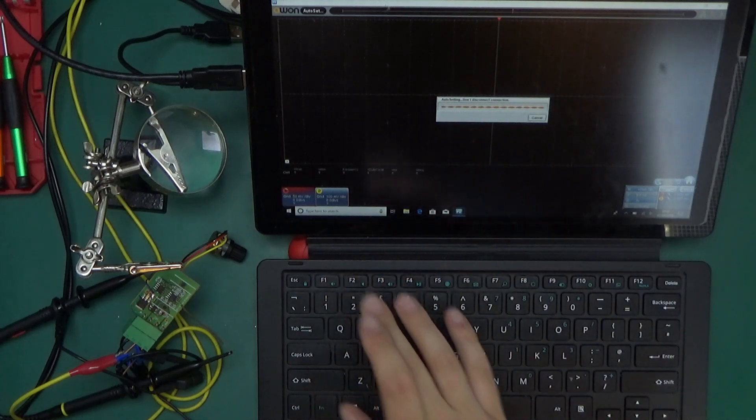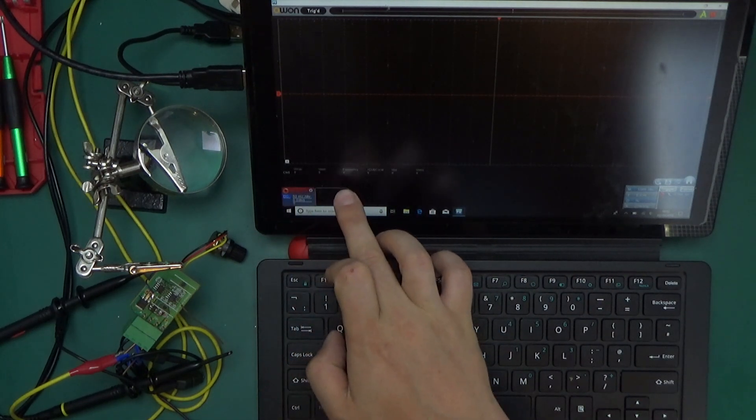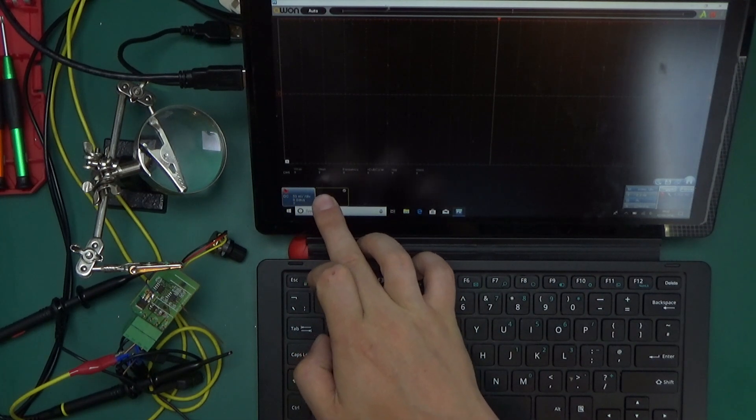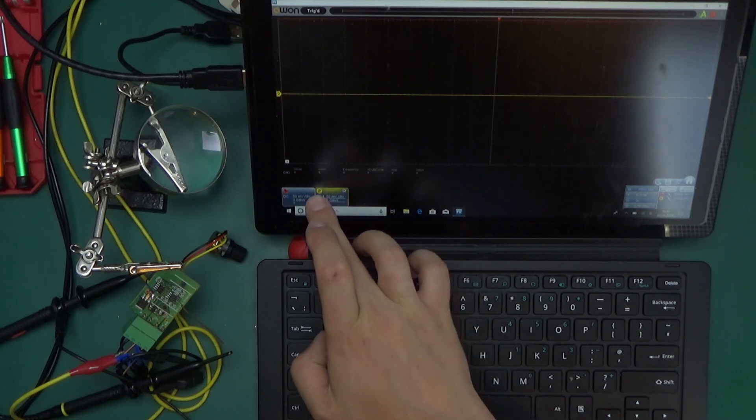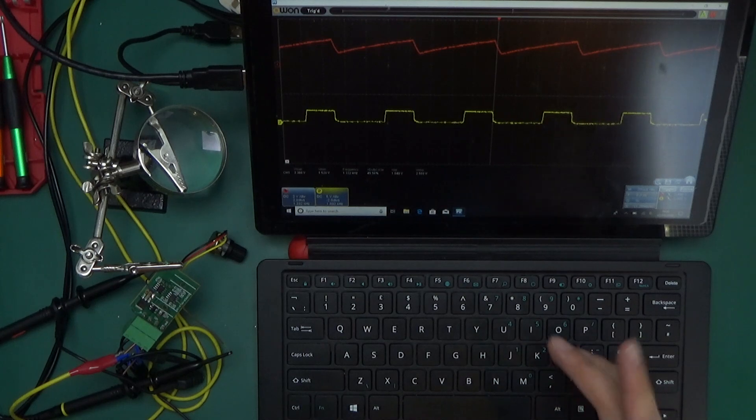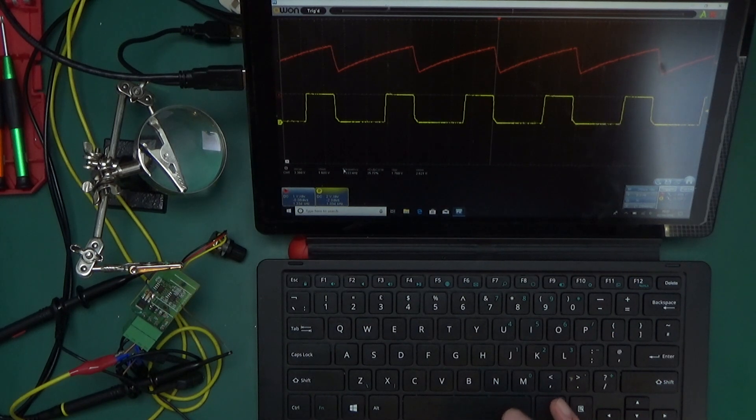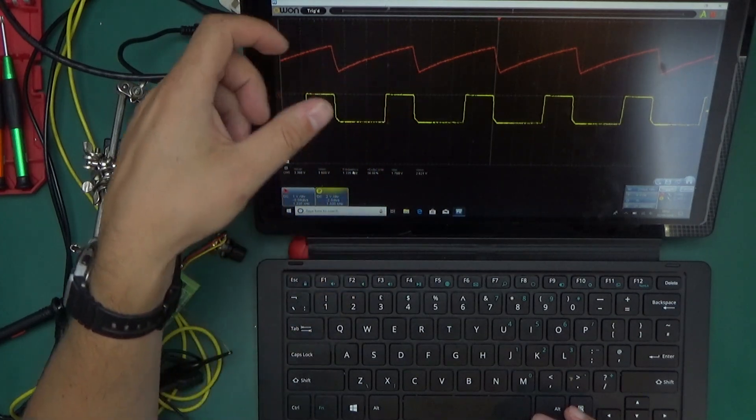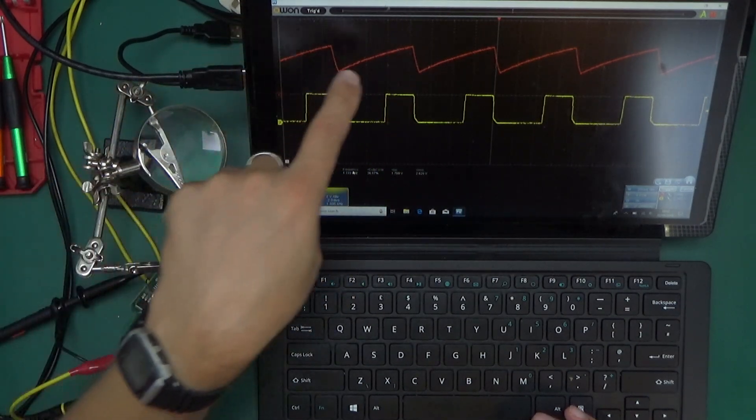So let's auto adjust the scope. So that should be on, let's put it on DC couple. Switch on both channels. There we go. So let me just adjust it maybe a little bit, so that's a little bit more descriptive of what's going on.